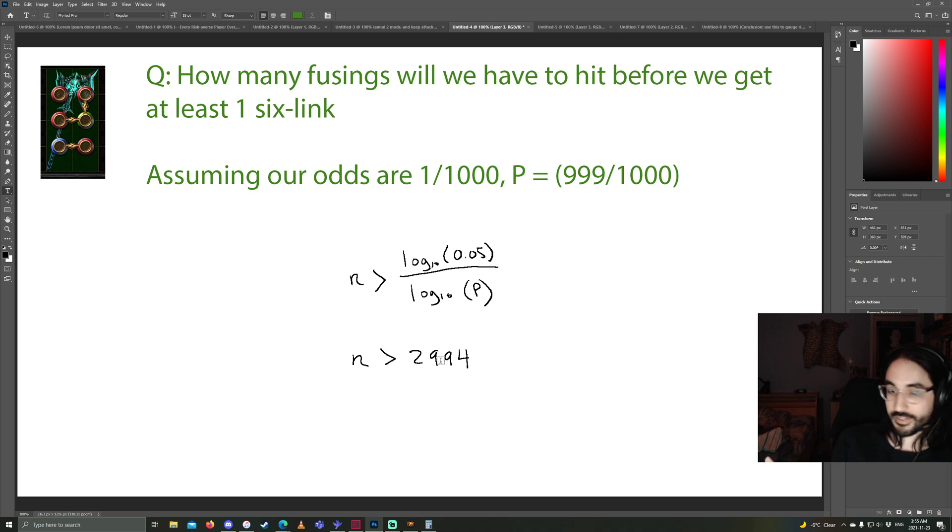But this means it can take up to 2,994 fusings until you get your first 6 link. We've all hit 6 links way faster than 1,000. But if you're really unlucky, you can get up to this high. What this also means is, you will almost never take more than this many fusings to hit your first 6 link. So there you go. There's some insight on rolling 6 links. So if you're really risk averse, maybe that 1,500 bench craft makes sense, even though, on average, it only takes 1 in 1,000. Because if you're very unlucky, it could take close to 2,994. It could take up to 2,994.